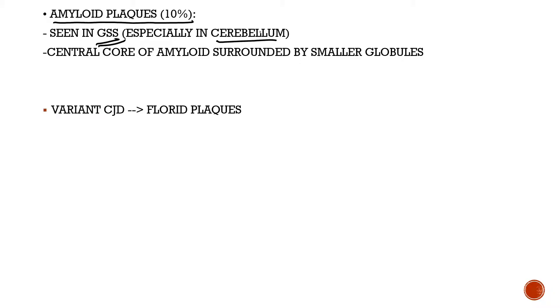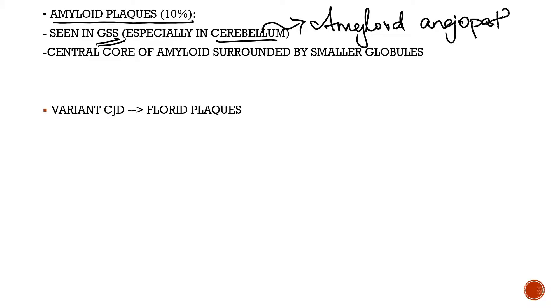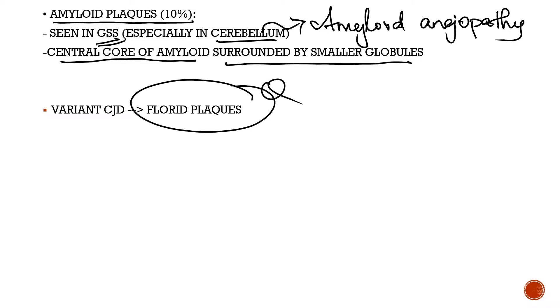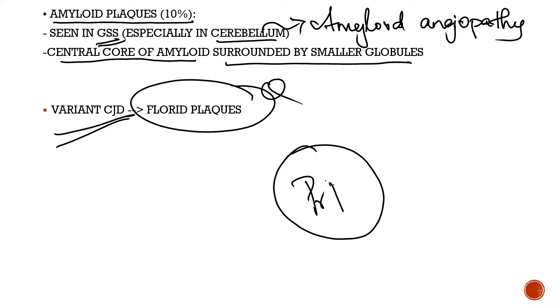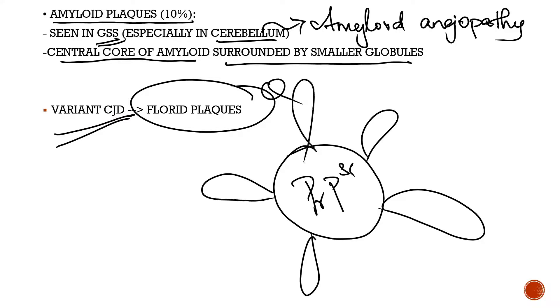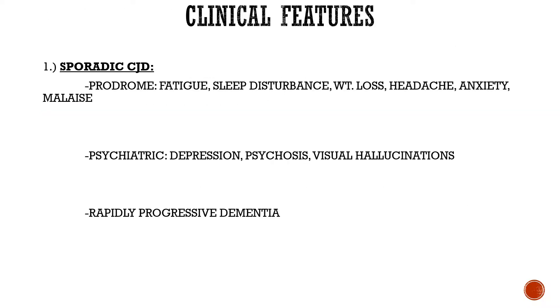Amyloid plaques are not common in CJD, but are a characteristic feature of GSS, which predominantly affects the cerebellum. In GSS, amyloid deposition occurs around blood vessels — a type of amyloid angiopathy — with a central core of amyloid surrounded by smaller globules. Florid plaques, seen in variant CJD, consist of a central amyloid core of PrPSc surrounded by vacuoles in a petal-like fashion, resembling a flower.